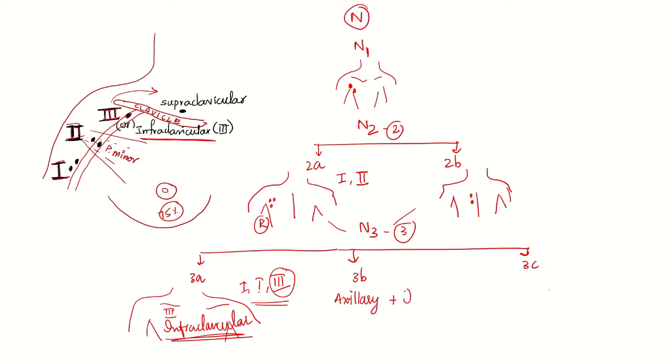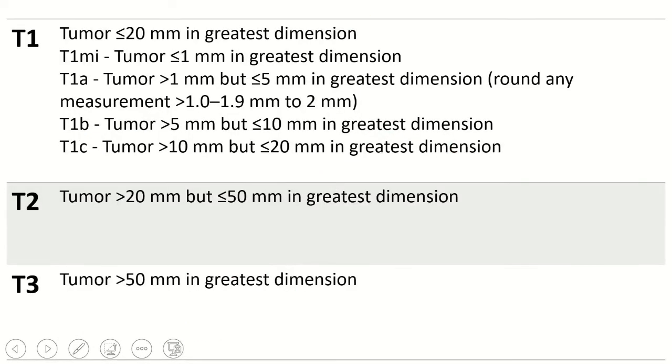3b is nothing but 2a plus 2b which is axillary plus internal mammary. Just remember it has 2a and 2b. 3c is supraclavicular. 3a is infraclavicular, 3c is supraclavicular. This is clinical staging of breast cancer.